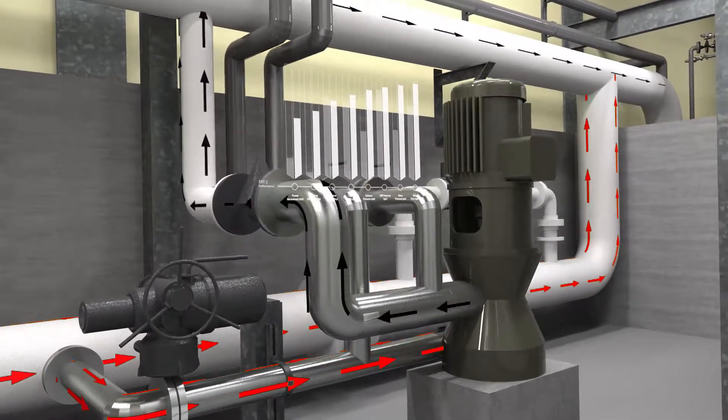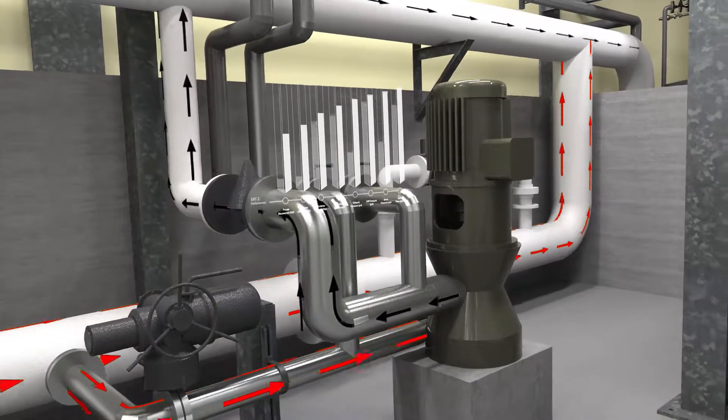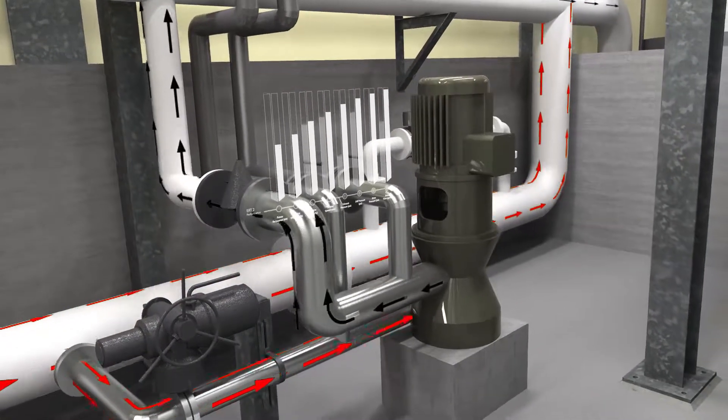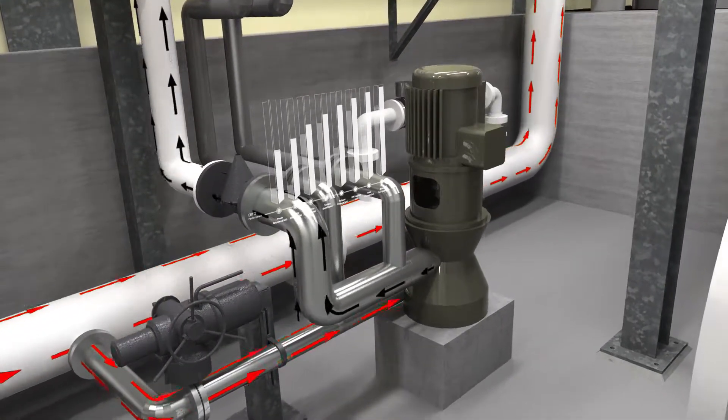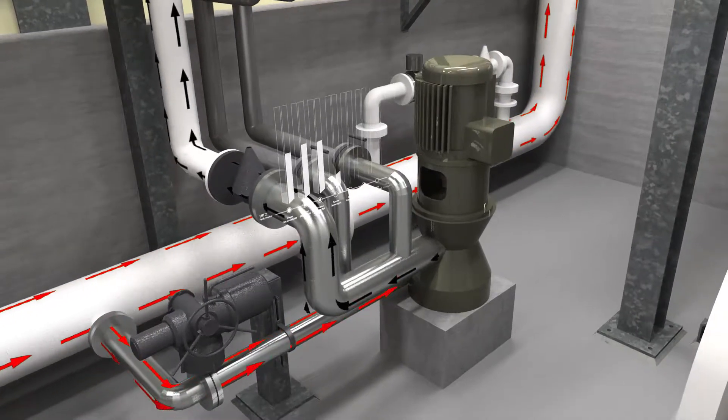Two energy recovery turbines transform this concentrate stream's energy into 28 kilowatts of electricity, which the plant uses to power its treatment processes.